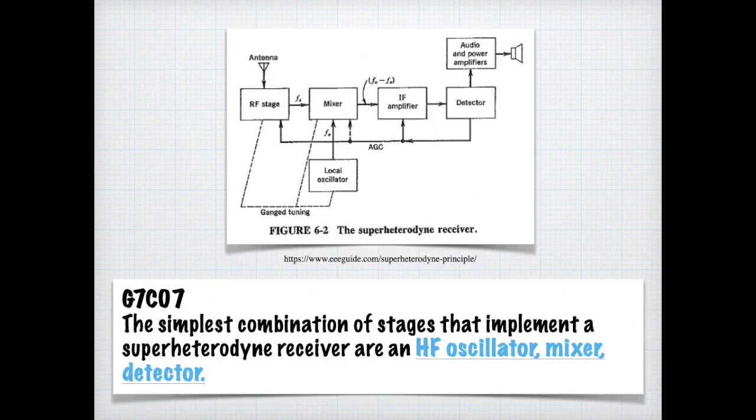For this schematic, you can see the RF stage is thrown into the mixer and an oscillator and it goes through an IF amplifier and into a detector. It can actually get even simpler than this little block diagram. For the exam, know that the simplest combination of stages that implement a super heterodyne receiver are an HF oscillator, mixer and detector.